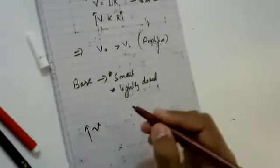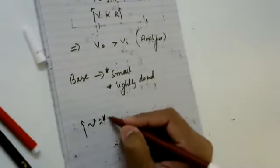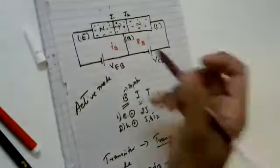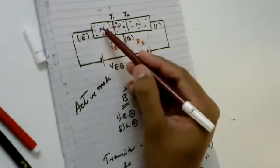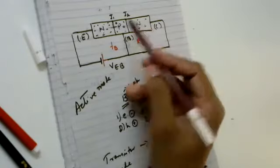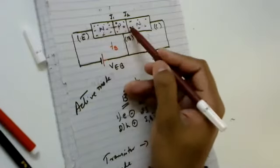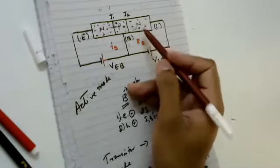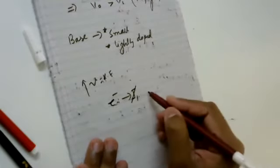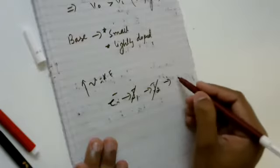The velocity of the electrons is very high, which means the kinetic energy is very high. Because of this, most of the electrons travel from the emitter and get accumulated in the collector. The electrons from the emitter travel, breaking junction J2, and get collected on the collector side.